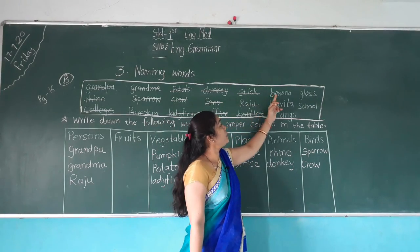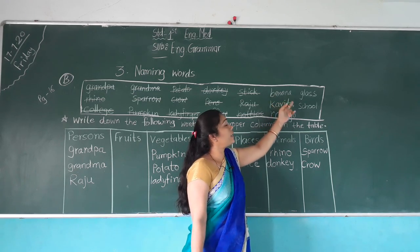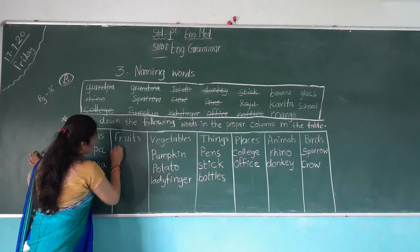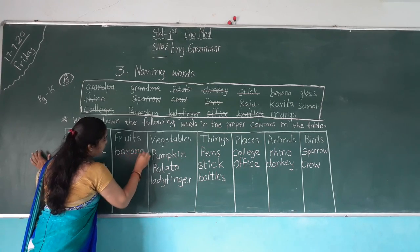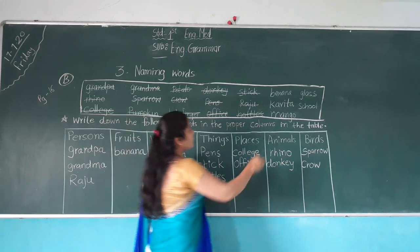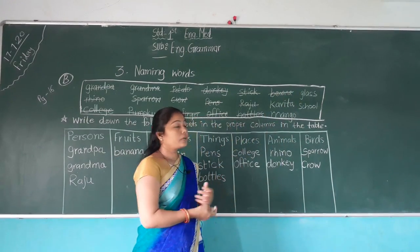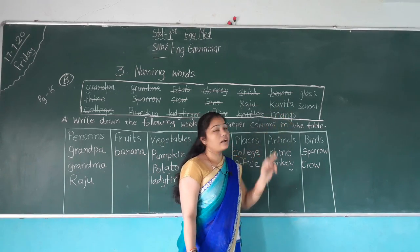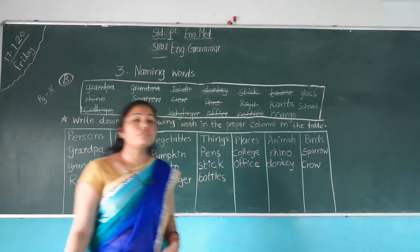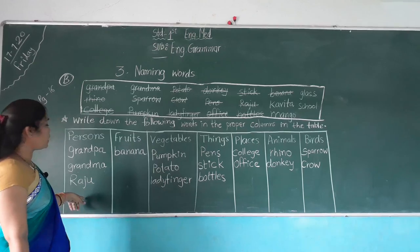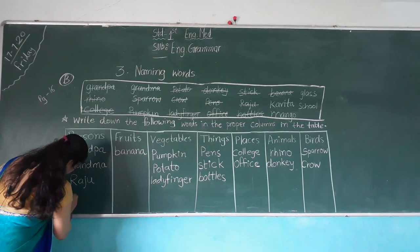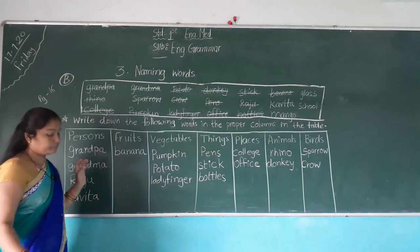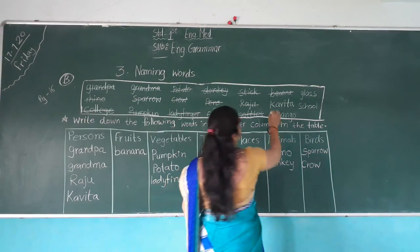Read the spelling — B-A-N-A-N-A — Banana. Banana is the name of a fruit, so write it in the fruit column — B-A-N-A-N-A — and cut from here. Read this spelling — K-A-V-I-T-A — Kavita. Kavita is the name of a person, so where do we write it? In the person column — K-A-V-I-T-A — and cut.